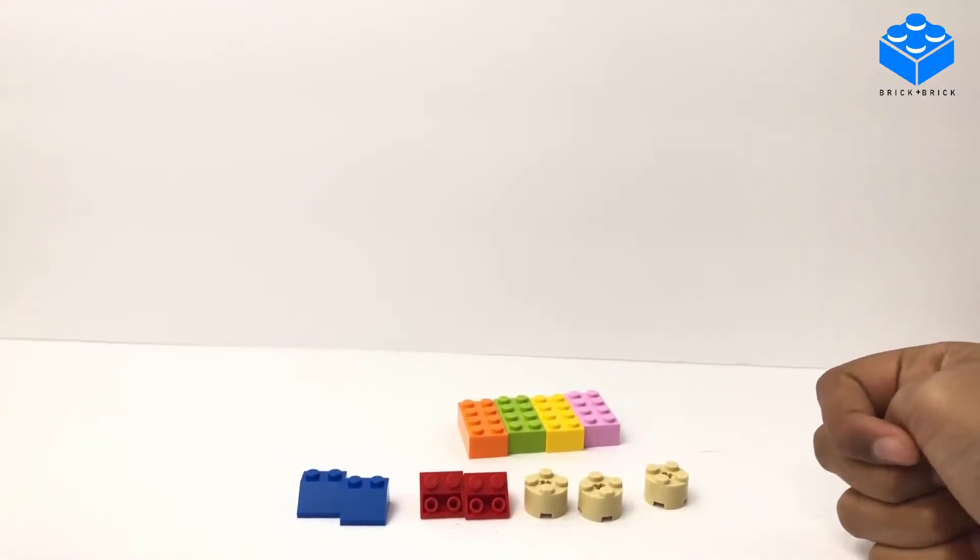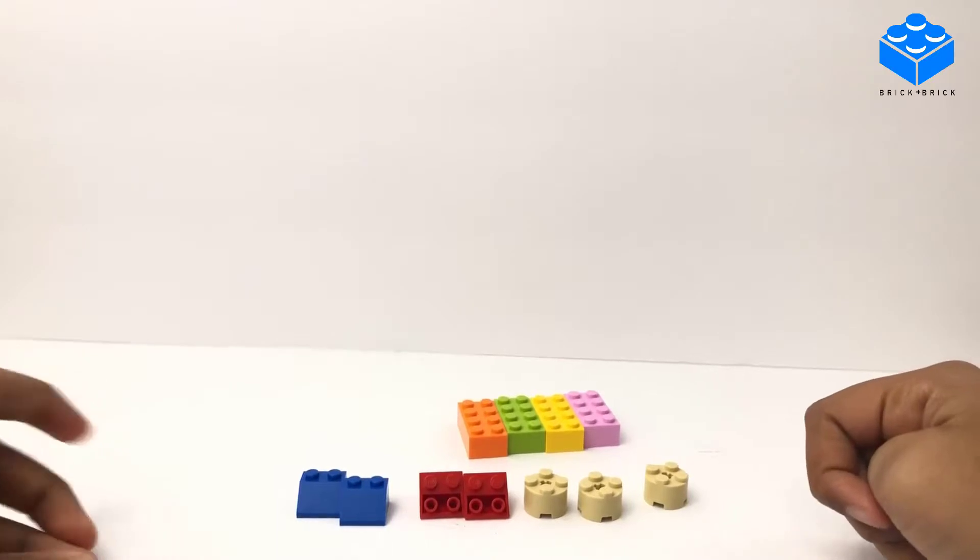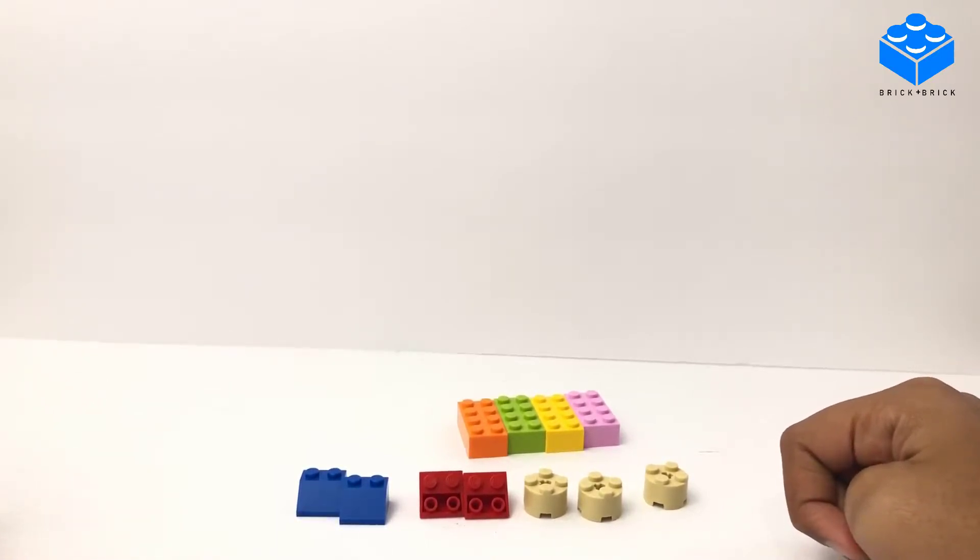two by two cylinder pieces, two two by two inverted slope pieces, and two two by two slope pieces. That's